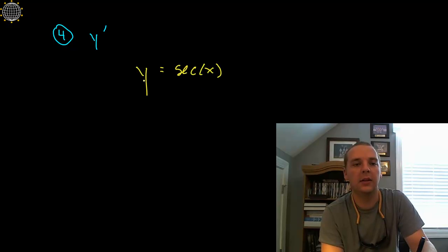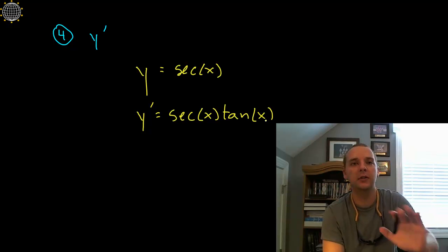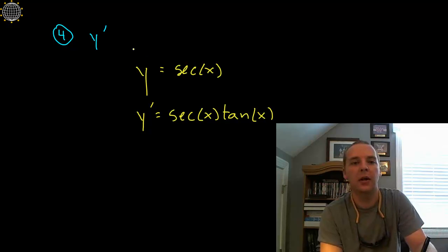Then the derivative of secant would be secant tangent. If you have not watched those videos yet, or are not concerned with the derivative of trig functions, that's not the important part. The important part is understanding the notation. If y equals secant x, then its derivative would be y prime. That's all we need to gather from this.